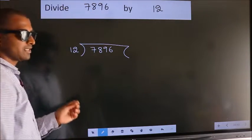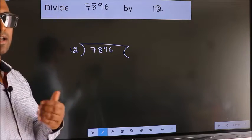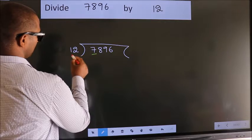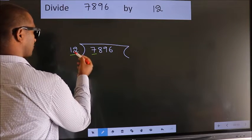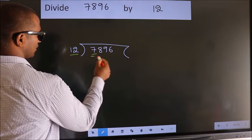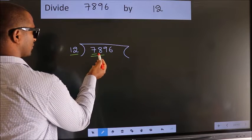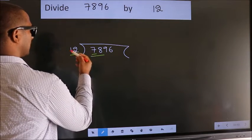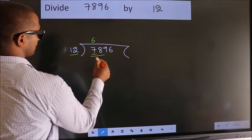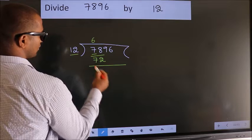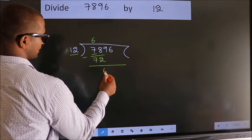This is your step 1. Next, here we have 7, here 12. 7 is smaller than 12, so we should take two numbers: 78. A number close to 78 in the 12 table is 12 times 6, 72. Now we should subtract. We get 6.